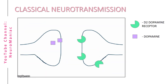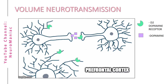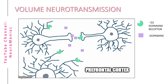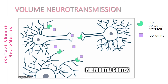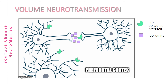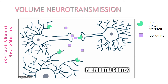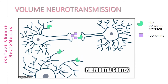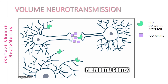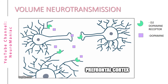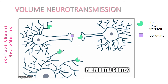Volume transmission, on the other hand, occurs beyond the synapse — basically when chemical messengers are released from the presynaptic terminal into the synapse, some molecules can diffuse, in other words spill over, into the extracellular space, meaning they can act on compatible receptors which are not located within the synaptic cleft.